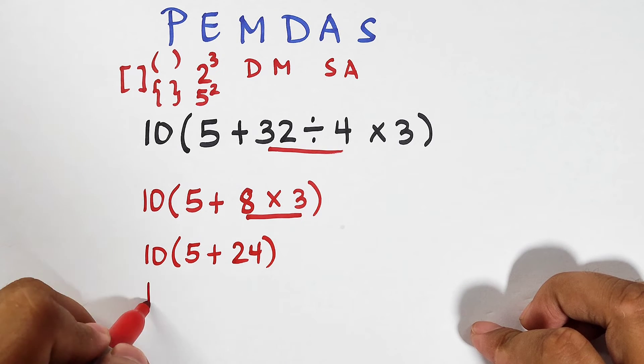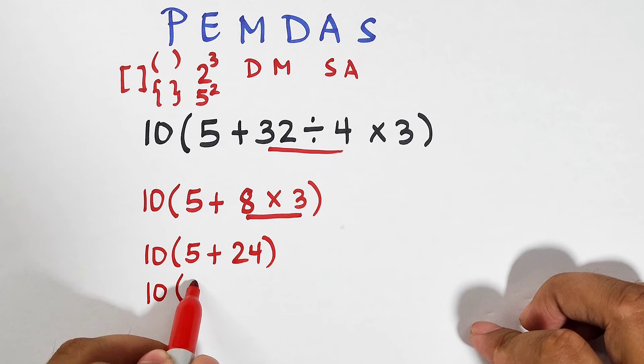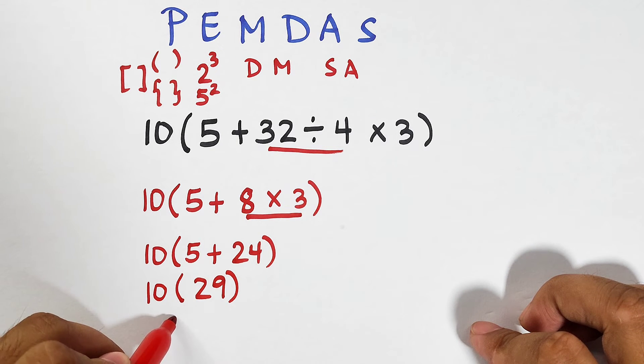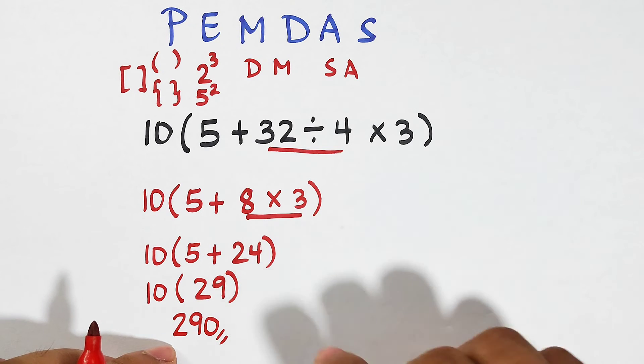And as you can see, we only have addition. So we have 10 times (5 plus 24) that is 29. And all you need to do is to multiply this: 10 times 29 is equal to 290. Meaning this one is the answer for this problem.